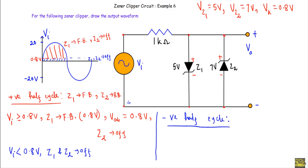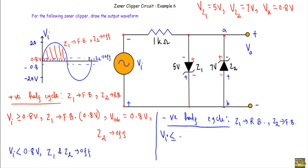Now consider the negative half cycle of the applied voltage. During the negative half cycle, this terminal will be at higher potential and this terminal at lower potential. The negative terminal gets connected with the p-side of Z1 and n-side of Z2, and the positive terminal gets connected with the n-side of Z1 and p-side of Z2. That means during the negative half cycle, Vi will try to put Z1 in reverse bias and Z2 in forward bias. When Vi becomes less than or equal to minus 0.8 volt, we get sufficient voltage to put Z2 in forward bias.